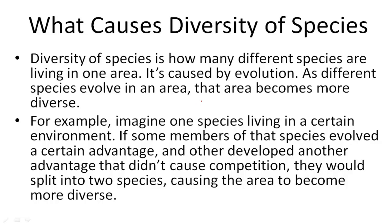So what causes this diversity of species? Diversity of species is just how many different species are living in one area, and it's caused by evolution. As different species evolve in that area, it becomes more diverse. So maybe it has white moths, and black moths, and even gray moths.